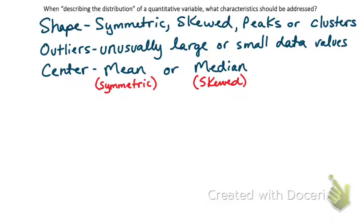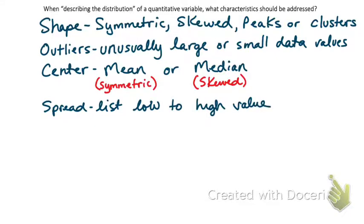The last thing is spread. We want to actually notate the low and the high number — literally list them. Why list the low to high value instead of just saying the range is 10? It gives more information. From 1 to 11, the range is 10. From 121 to 131, the range is also 10 — but those are very different data sets. So we list the low and the high value so we know exactly where the data is located.